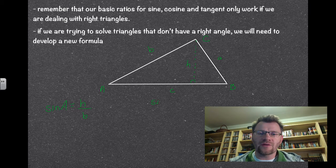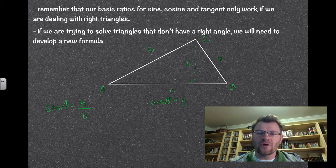I'm going to do the same thing over here. Sine b equals opposite, which is h, over hypotenuse, which is a.